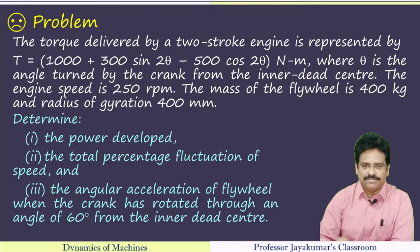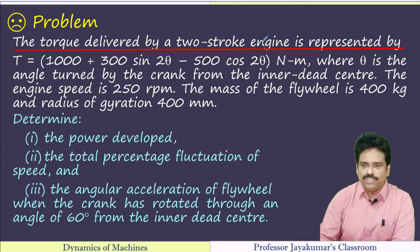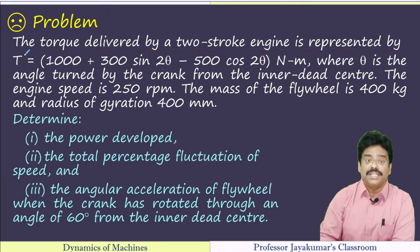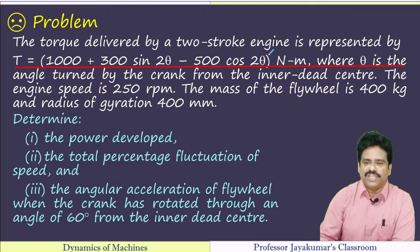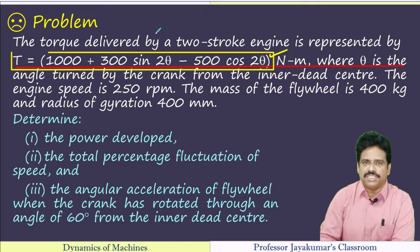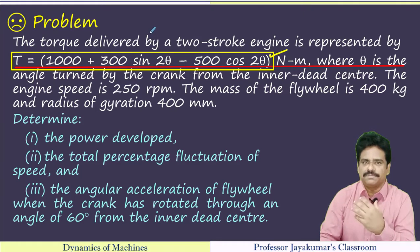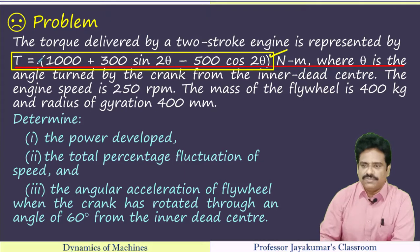The torque delivered by a two-stroke engine is represented by the equation: T equals 1000 plus 300 sin 2θ minus 500 cos 2θ Newton meters. So the turning moment diagram is given in the form of an equation, where theta is the angle turned by the crank from inner dead center.